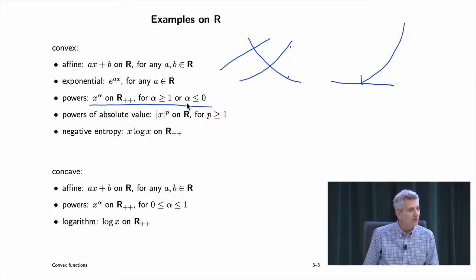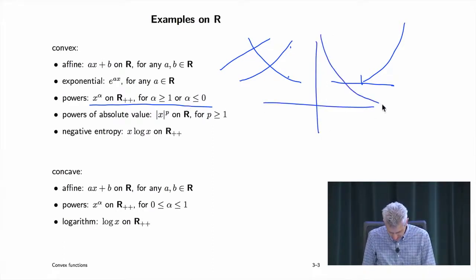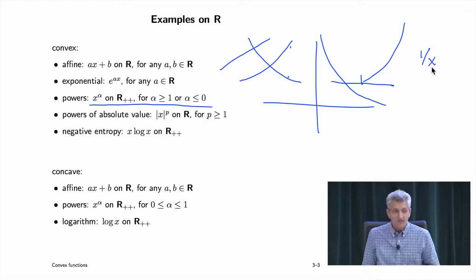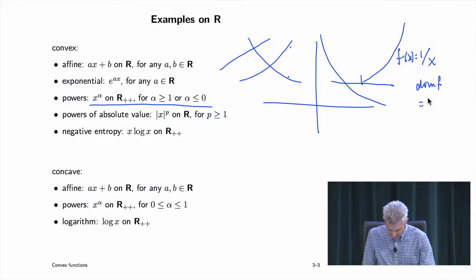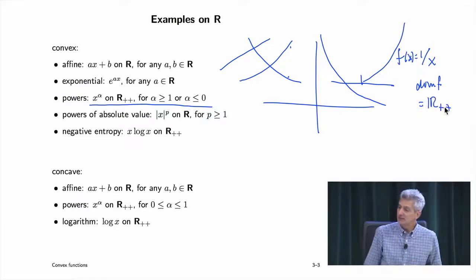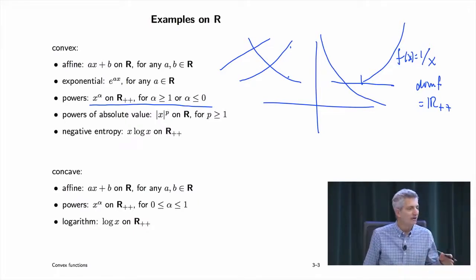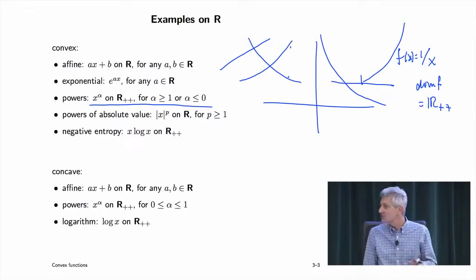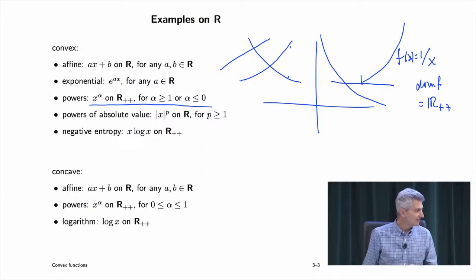For example, 1/x is also convex on R++. We have to be careful: the domain is R++ (strictly positive reals). There's a distinction between informally writing 1/x and what you really mean. We mean a function not defined for x negative. By the way, what can you say about 1/x for x negative? It's concave.